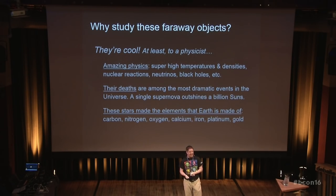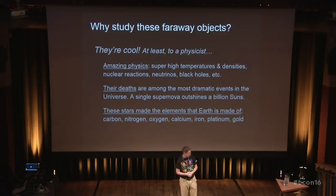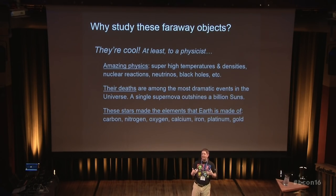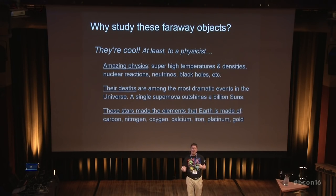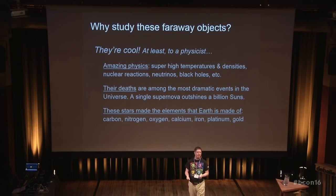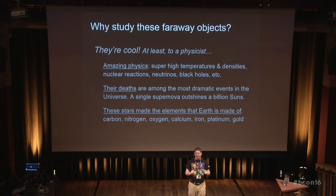These objects are also fabulously bright when they explode. A single supernova is brighter than a billion times our own sun — a typical star. These objects outshine pretty much everything else in the universe and can rival the entire light from a single galaxy like our Milky Way. In addition, supernovas and the stars that lead to supernova explosions produced the chemical elements that we're made out of — the elements that formed the Earth, the elements that formed us. All the carbon, nitrogen, oxygen, calcium, and iron in the universe was produced in stars and in supernova explosions. In some sense, we're genetically linked to these distant objects, distant in time and space, that occur in our universe.